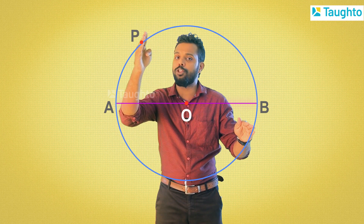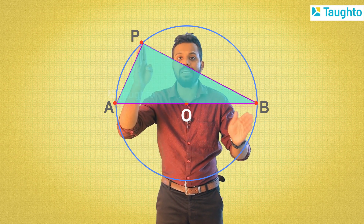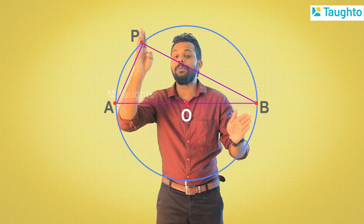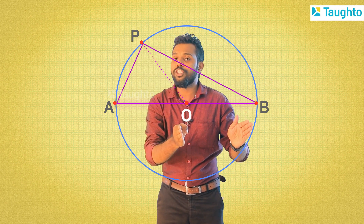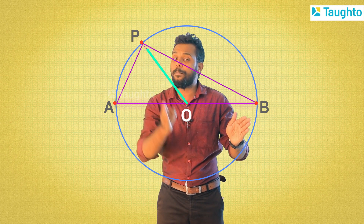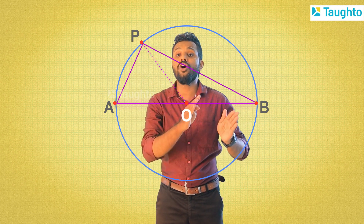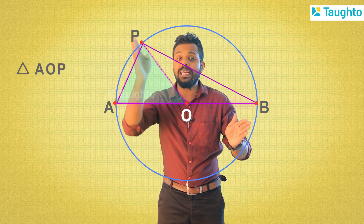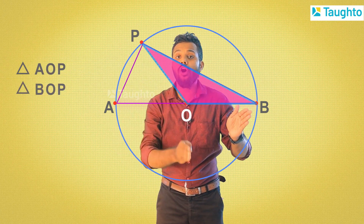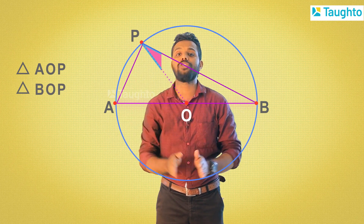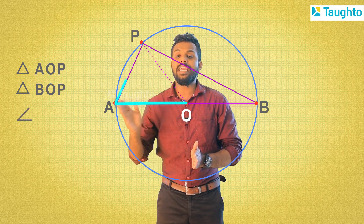I have a triangle. The triangle is AB. I have a point in the middle. The triangle is AB — triangle OAP.